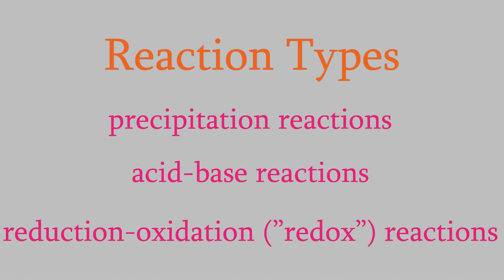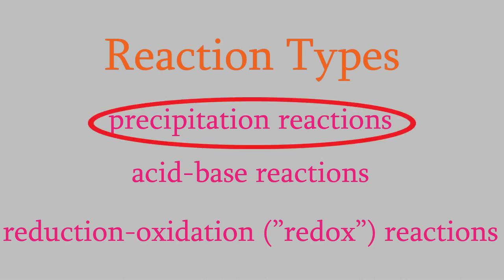Almost every chemical reaction belongs to one of these three categories, so if you understand these, you'll be able to understand a lot about all kinds of reactions that you see in this course and in every chemistry course that you'll ever take. In this video, we'll focus on precipitation reactions, and we'll look at each of the other two types in the next two videos.